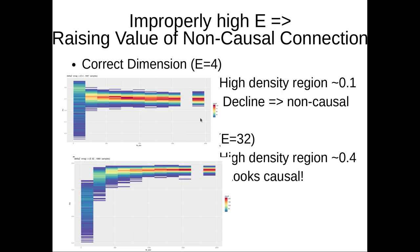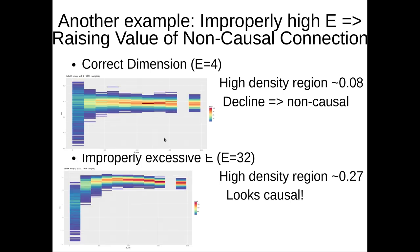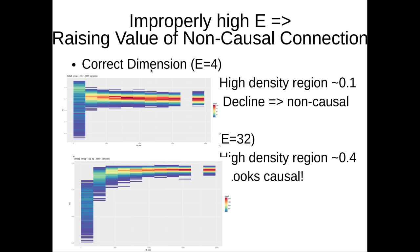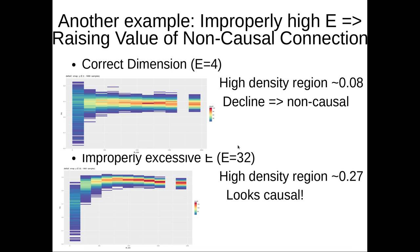Sometimes you can have non-causal connections that actually do look causal for an E that's quite far off. This is a non-causal connection, and as you ramp E up to something really high like 32, it could start to look causal. This is dangerous. I don't go generally above E equal about 10. I rarely find it needed at all.